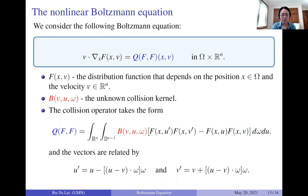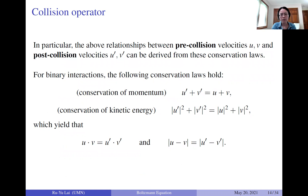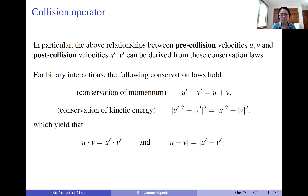The collision operator Q(f,f) characterizes binary particle interactions. Before collision, U and V are the pre-collision velocities; after collision, U-prime and V-prime are the post-collision velocities. The two relationships connecting them are derived from two conservation laws: conservation of momentum — the sum of velocities is preserved before and after collision — and conservation of kinetic energy. From these, one can derive the identities relating pre- and post-collision velocities.